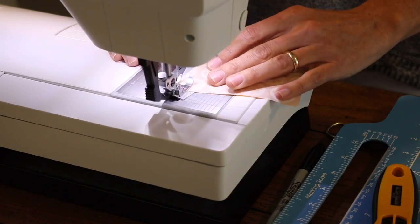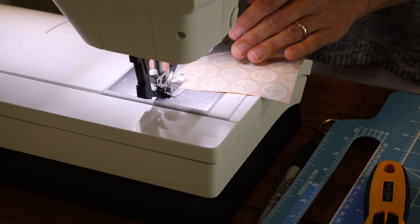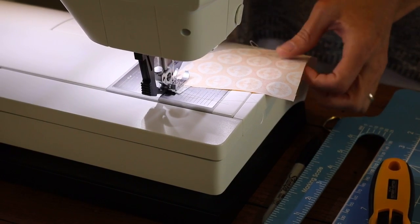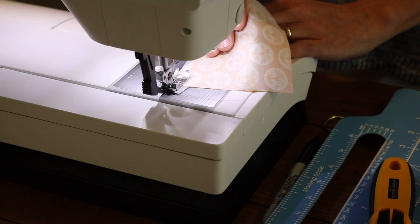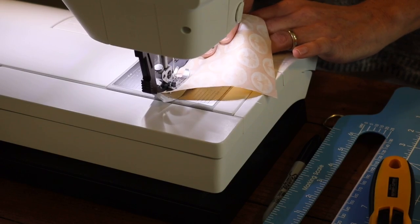So as we sew these two curves together, we want to make sure the curves stay together right underneath the foot. And we use a quarter-inch foot for sewing these curves. And we want to just at first just take it slow and gradually ease those two pieces together.